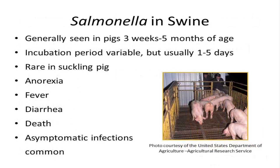Salmonellosis is more commonly seen in older pigs, not ones that are one to three weeks old and are still suckling the sow. When pigs become ill with Salmonellosis, they develop a fever, have a decreased appetite, and may stop eating altogether. They usually develop diarrhea, and when combined with dehydration, loss of electrolytes, and infection throughout the body, they can eventually die.